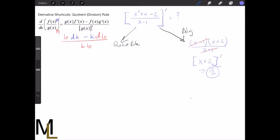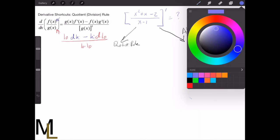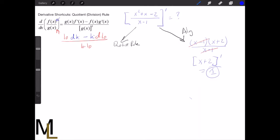So the derivative of this guy is just 1 if we use algebra. So now let's take a look by using the quotient rule. So using the quotient rule, let me start with the high function, which is f of x. So f of x is going to be the top of our function that we're trying to do. So x squared plus x minus 2.